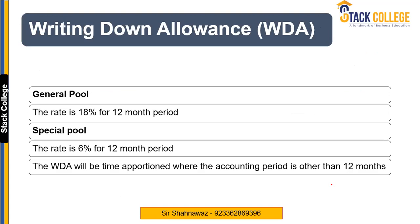As far as the Written Down Allowance is concerned, we have to apply WDA on main pool items as well as special rate pool items. There are two pools and we have to identify which assets fall under the main pool and which assets fall under the special rate pool. There is a definition for special rate pool items. If an asset falls under that definition, we call it a special rate pool item; otherwise, it is a main pool item.